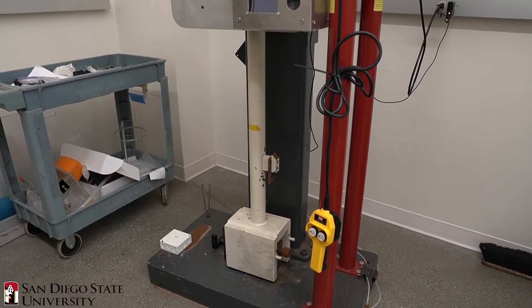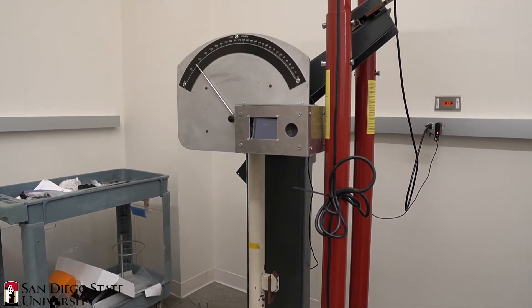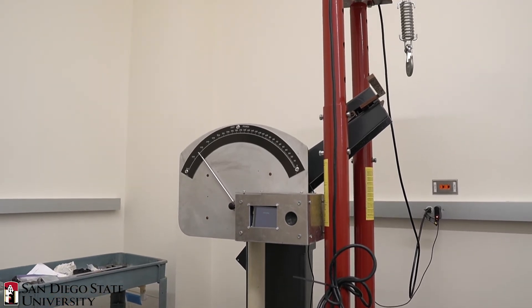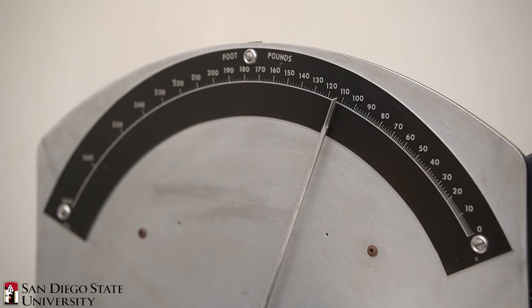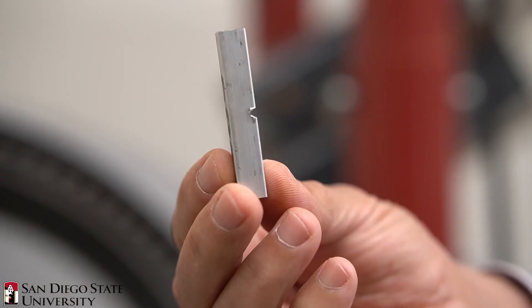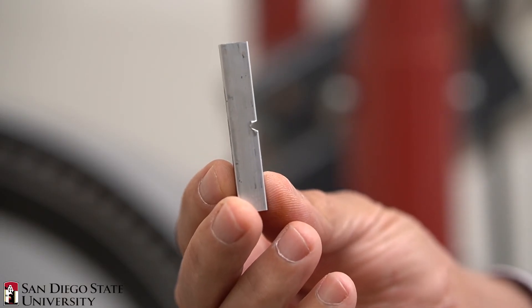The Sharpie test allows students to compare the amount of energy absorbed by a material during fracture. The Sharpie impact test is performed with specimens of low carbon steel, stainless steel, aluminum alloy, brass alloy, copper alloy, and hardwood.